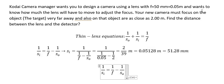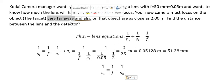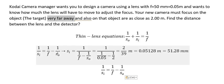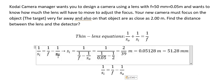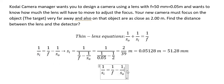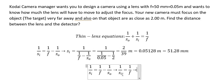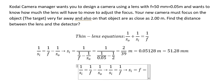Now for the second case: when we adjust the focus for an object very far away, S0 goes to positive infinity. That means 1 over S0 goes to 0. So the thin lens equation simplifies, and Si equals f, which is 0.05 meters.